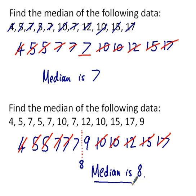To recap, in the first question we put all the numbers in order, and we crossed them off from either end until we got the middle number, which was 7. So the median is 7.